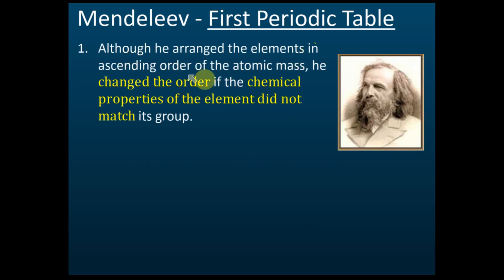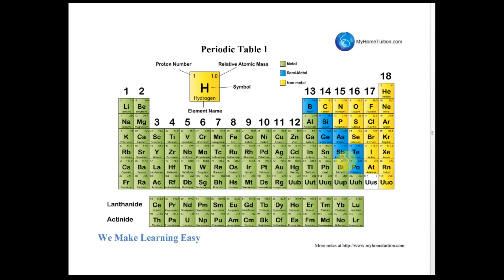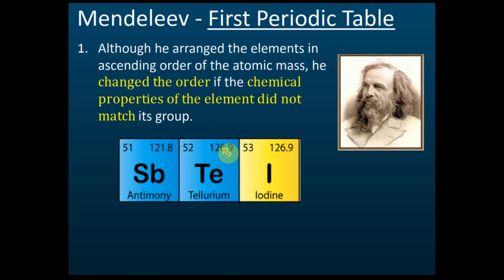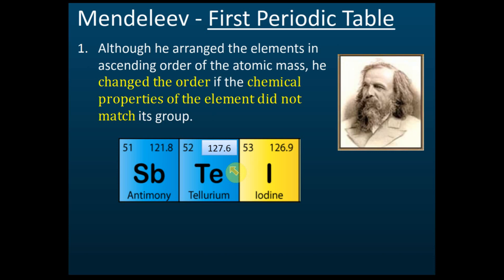Although he arranged elements in ascending orders of atomic mass, in some cases he changed the order if the chemical properties did not match the group. For example, in the periodic table, antimony, tellurium, and iodine — tellurium has atomic mass 127.6 and iodine 126.9. There is a correction needed here: change the value to 127.6, as the same atomic mass was incorrectly given for both.